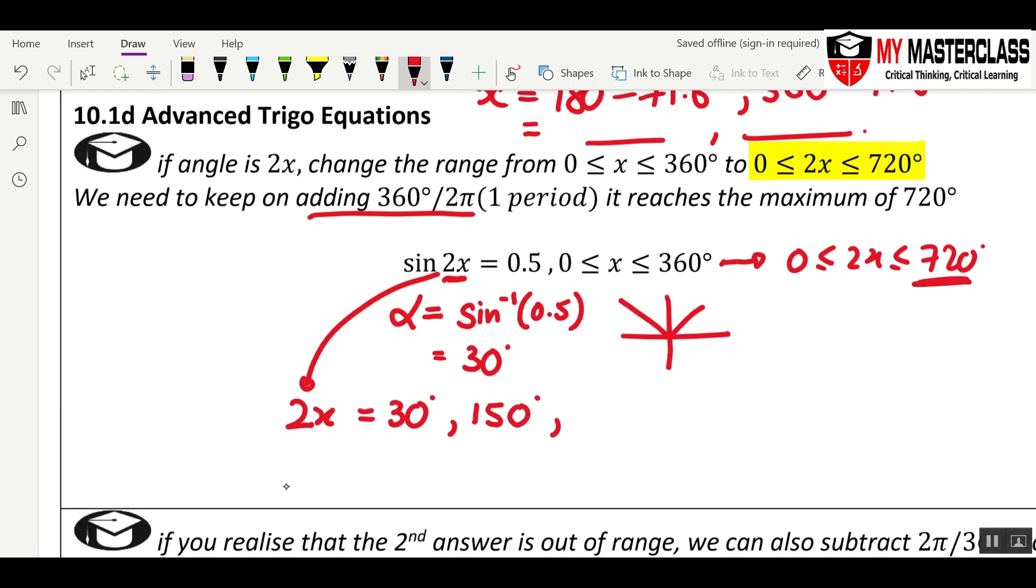Now, because the right bound is 720, we need to keep on adding 360 to the first value. 360 plus 30 degrees, comma, 150 plus 360 degrees. Keep on adding 360. Usually for 2x, there will be 4 answers.